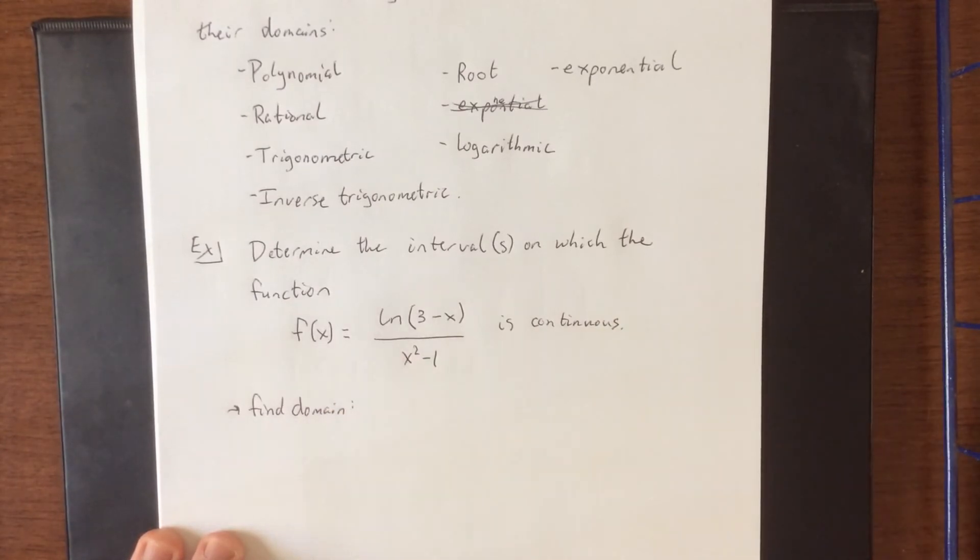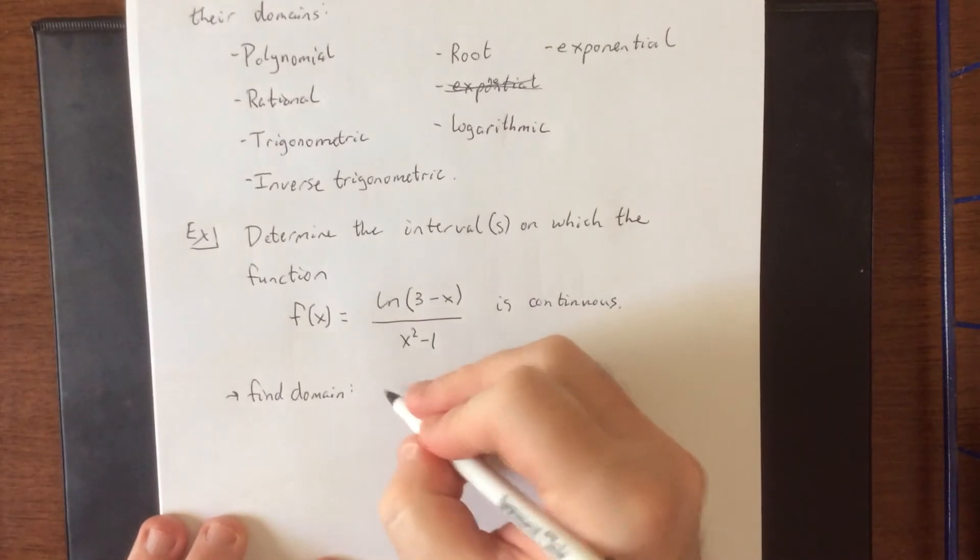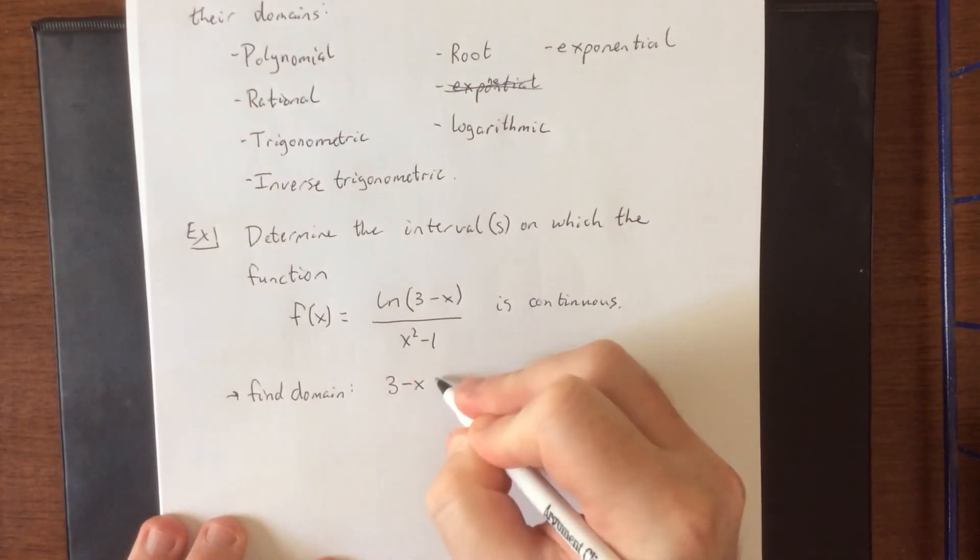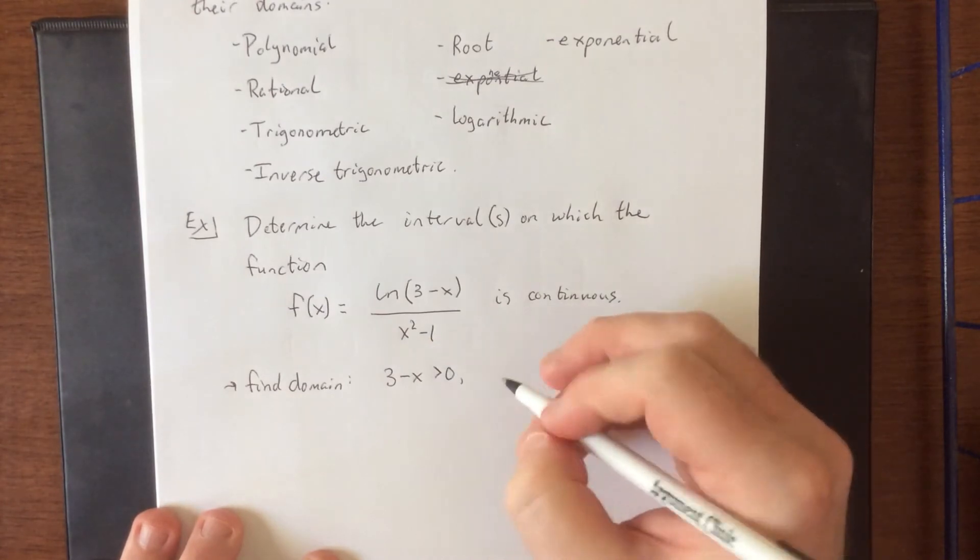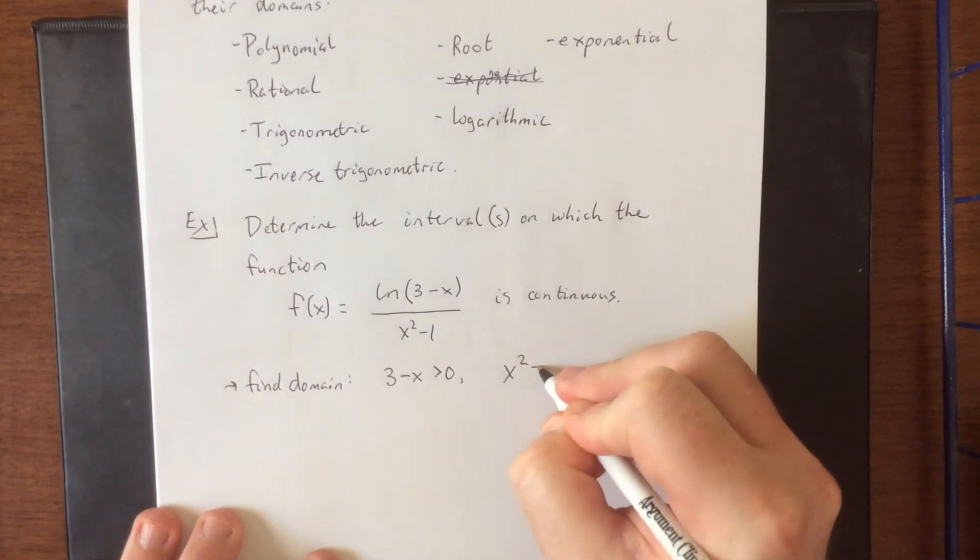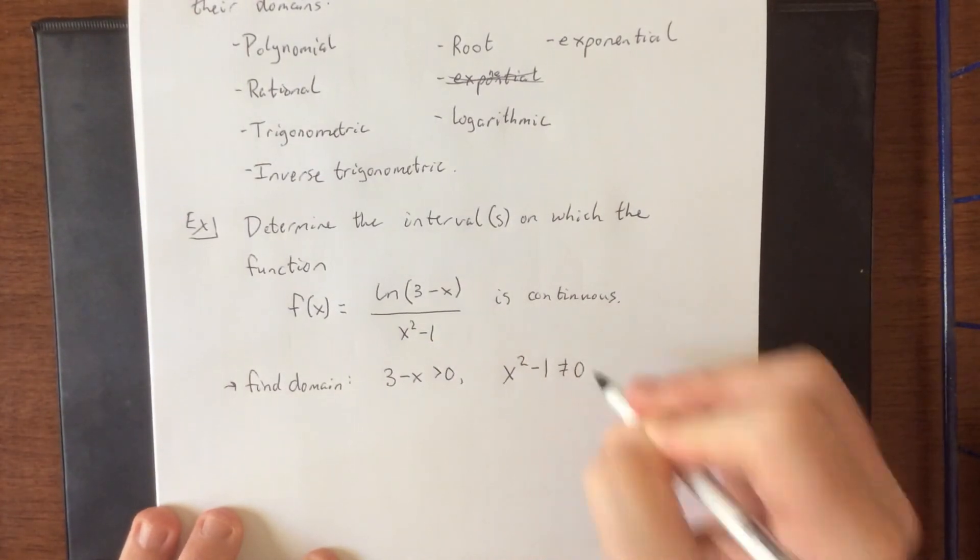So rules for domain that we currently have, the argument of a logarithm must be a positive number, therefore 3 minus x has to be greater than zero. Additionally, a denominator is not allowed to be equal to zero, so x squared minus 1 is not equal to zero.